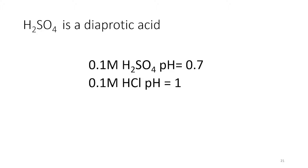Sulfuric acid is a diprotic acid that can give two protons, not one like HCl or HNO3, which makes the pH of sulfuric acid lower than the pH of a comparable concentration of HCl. For 0.1 molar H2SO4, the pH for the first proton is equal to 0.7, and for the second proton is 0.2, where HCl at 0.2 molar has a pH equal to 1.